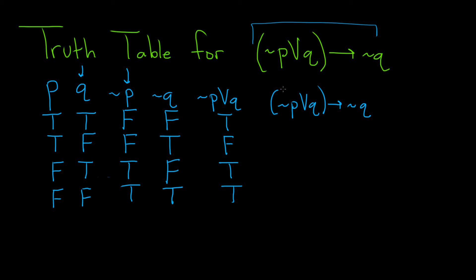This one is only false when this piece is true and this piece is false. That's the only time it's false. So we're looking at this here and we're looking at this here. When the first part is true and the second part is false, it's false. Otherwise, it's true.